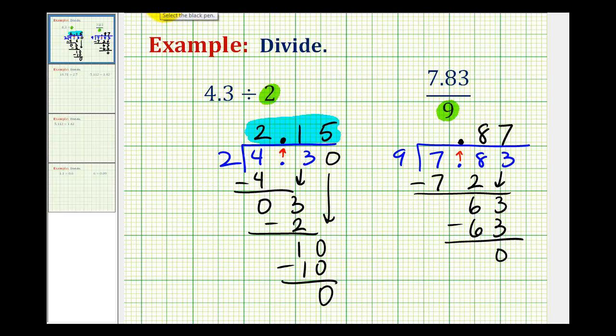And often what you'll see textbooks do is put a zero in the ones column. It's not required, but sometimes you'll see it written like this. In the next video, we'll take a look at how we divide a decimal by another decimal.